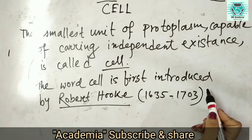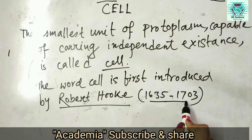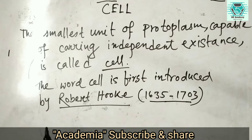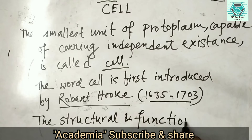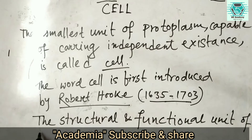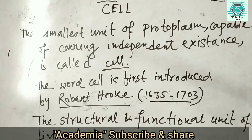The word cell was first introduced by Robert Hooke in 1635. Cell is also defined as the structural and functional unit of living body. Most cells in human beings have a diameter of 10 to 20 micrometers.